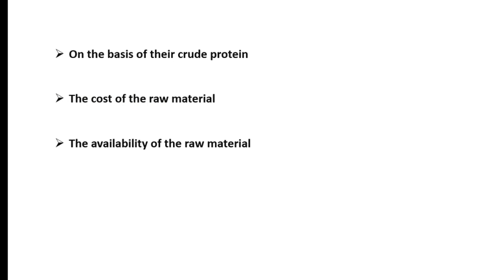The next thing we are going to look at is selecting raw materials on the basis of their crude protein. Crude protein is the amount of protein in each of these feed ingredients, and the value of each ingredient's crude protein is established from laboratory proximate analysis. It is already an established figure that you just need to use appropriately. I will provide the crude protein of some of these ingredients in the course of this video.